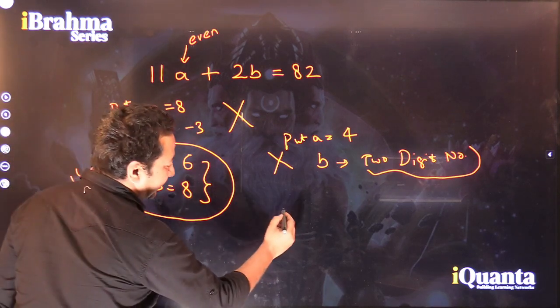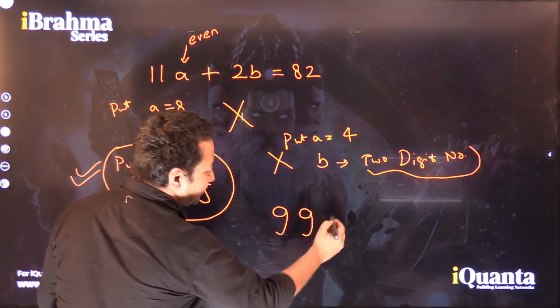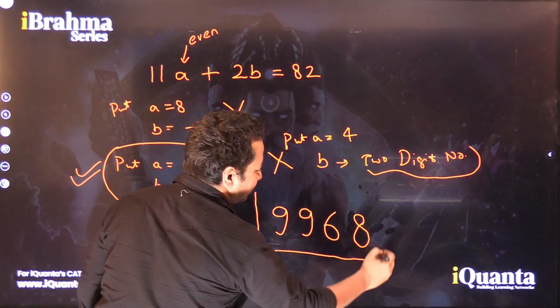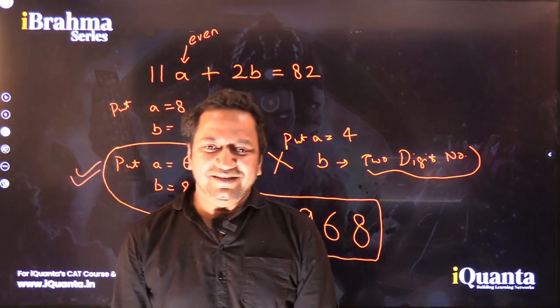Now the number will be 9, 9, A is 6, and B is 8. So the number is 9968. Hope that answers your query. Thank you.